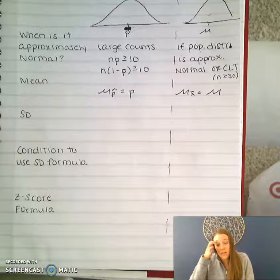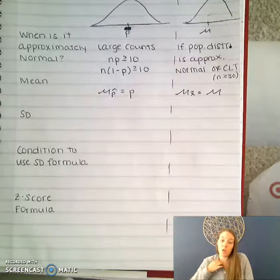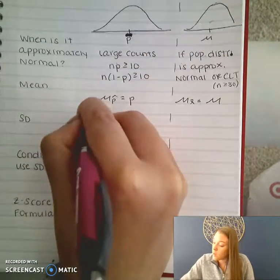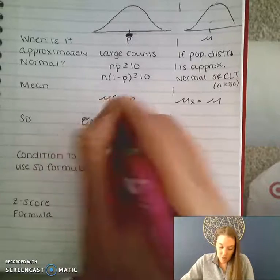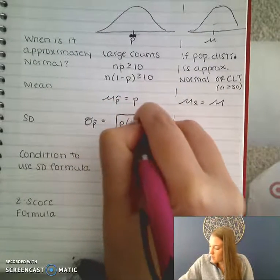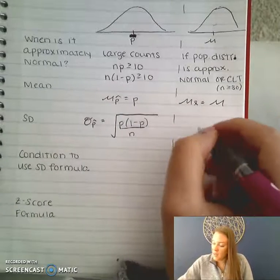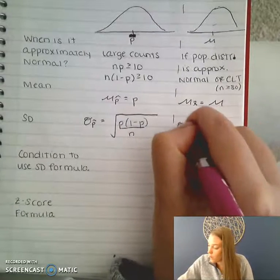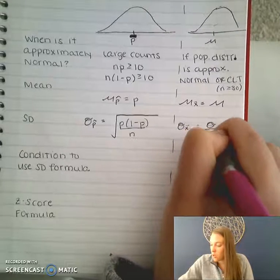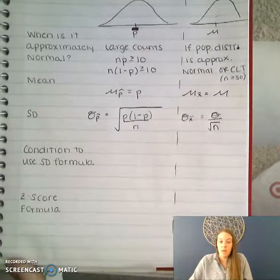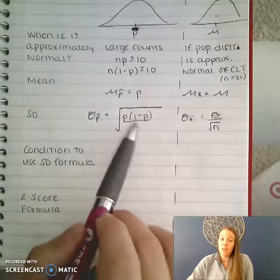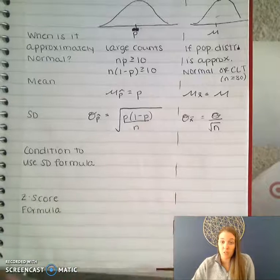The standard deviation formulas were a little bit involved. The standard deviation for a proportion is equal to the square root of p times (1 minus p) over n. The standard deviation for a sampling distribution of means is equal to the standard deviation of the population over the square root of n. The population proportion and standard deviation would be given to you — these are values you would plug in.